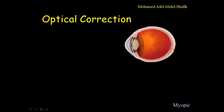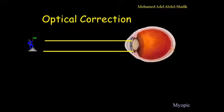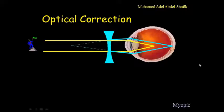Now we come to the optical correction of myopia. Object very far, parallel rays will focus in front of the retina. So we need to put a minus lens to diverge these rays so the rays will come to a focus on the retina. The more the myopia, the more the power we need to put in this lens.